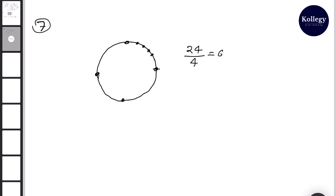1, 2, 3, 4, 5, 6, 7, 8, 9, 10, 11, 12, 13, 14, 15, 16, 17, 18, 19, 20, 21, 22, 23, 24. 24 points.